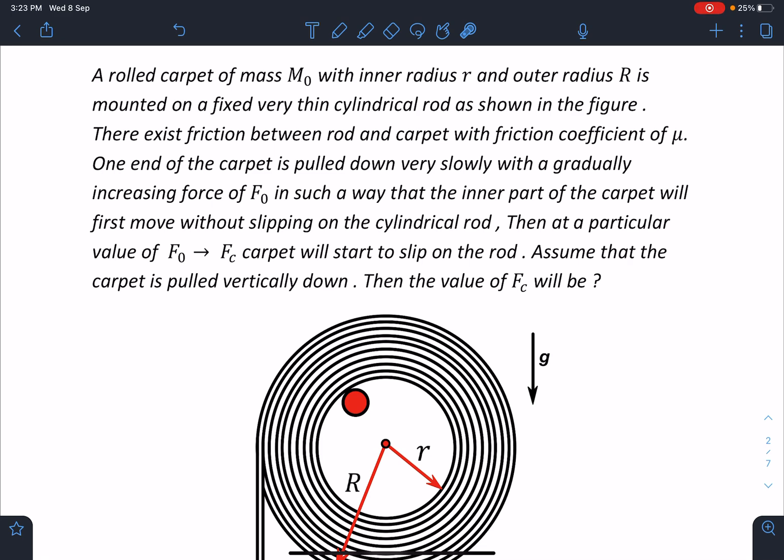Then at a particular value of F0 tending to Fc critical, carpet will start to slip on the rod. Assume that the carpet is pulled vertically down, then the value of Fc will be?